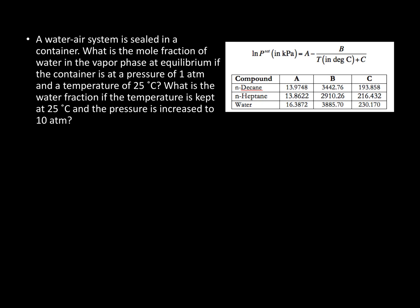These are all phase equilibrium problems, so the starting point should always be that the partial fugacities have to be equal. The only difficult part is substituting in our assumptions and approximations. For the vapor, if it's an ideal state, it's just the mole fraction times the system pressure — that is the partial fugacity. The pressure approximates the pure species fugacity, and Yi times P approximates the partial fugacity given the Lewis-Randall rule, which is volume additivity of the gases.